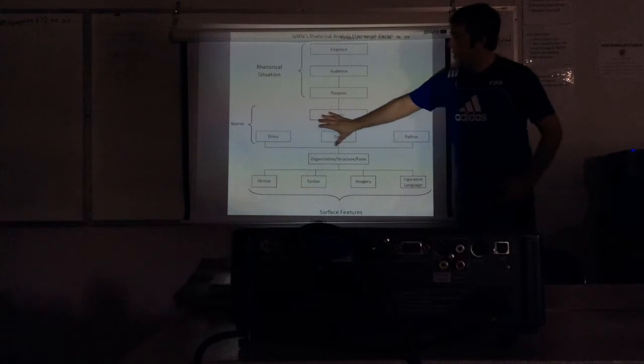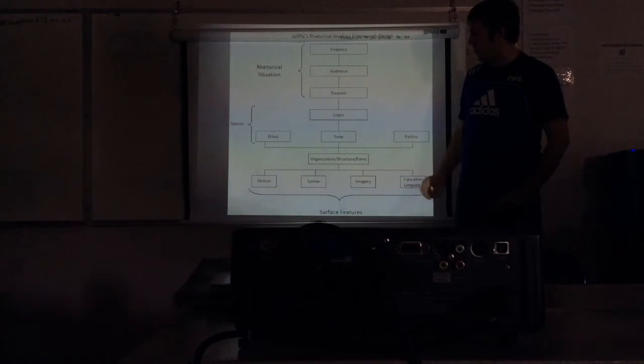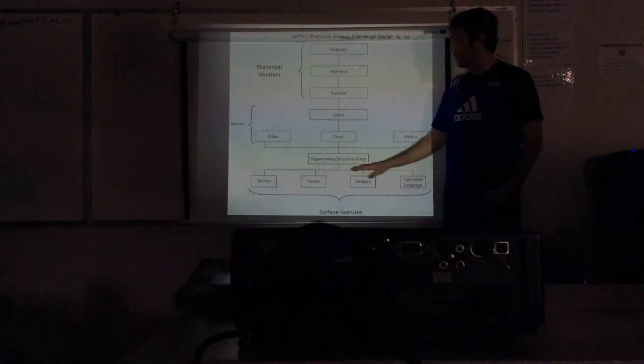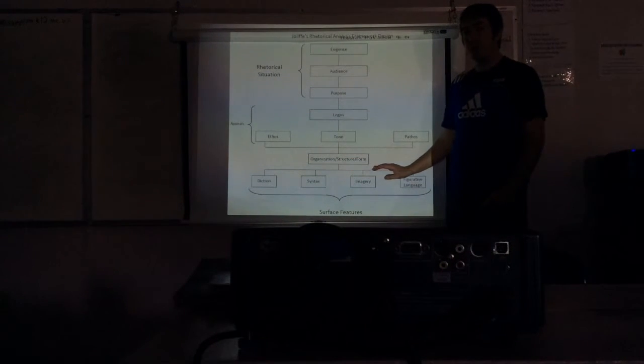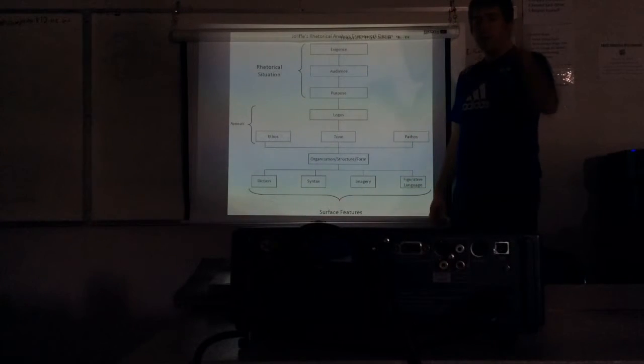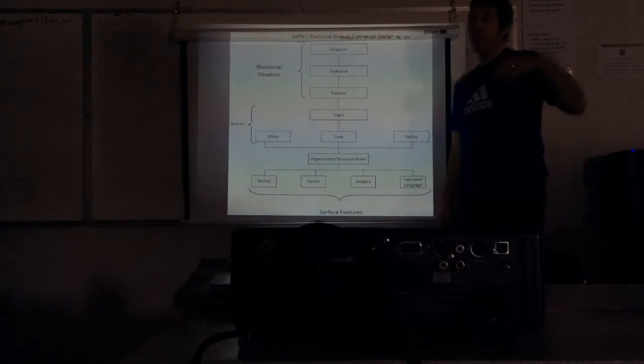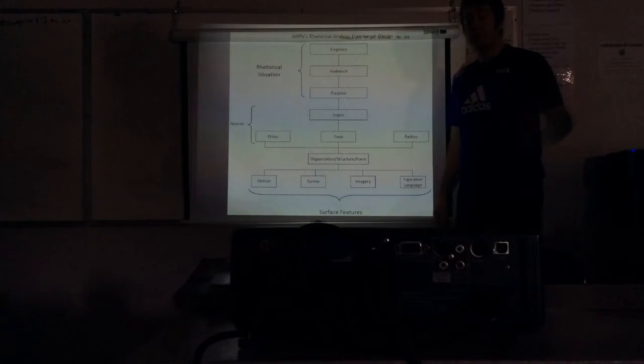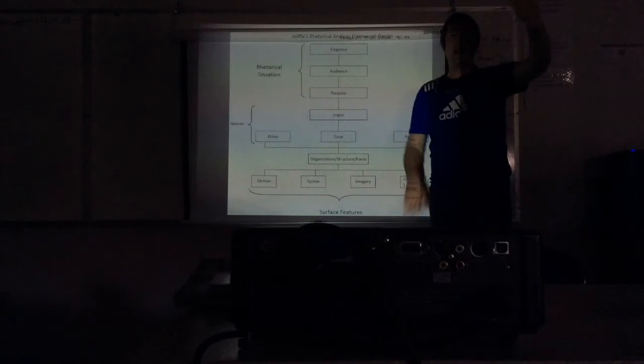All right. So after we deal with the appeals, we move down into surface features. Part of surface features, kind of a transition from tone, is going to be your organization and your structure of the paper, right? So when I read a text, it's got a certain structure to it. Why did the person giving this speech or writing this essay go in a specific order?